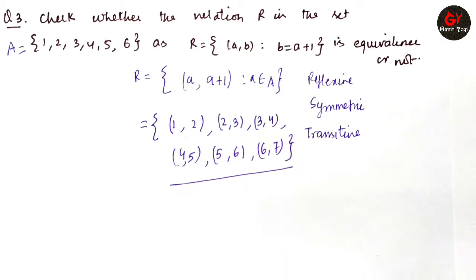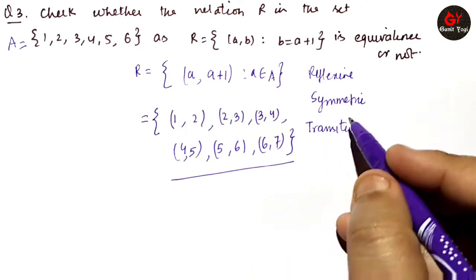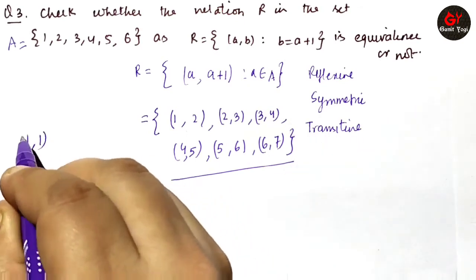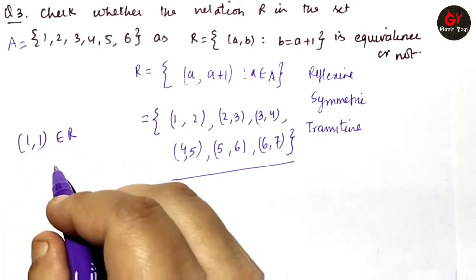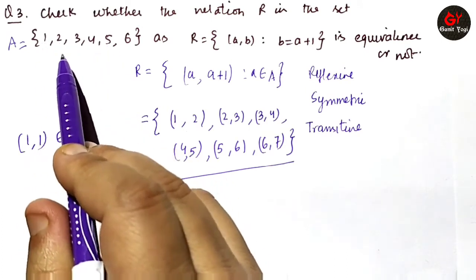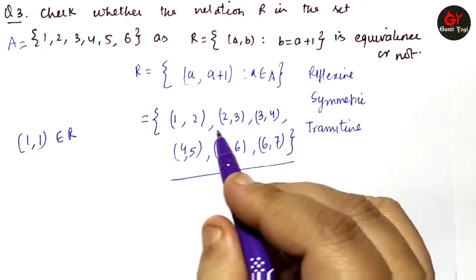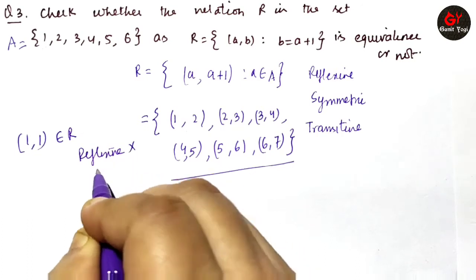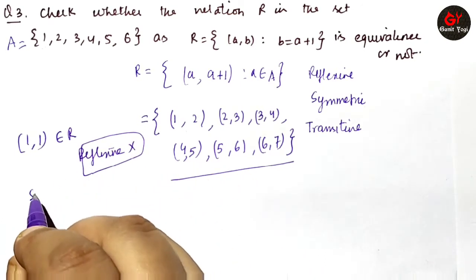First, reflexive — this will not hold, because the reflexive condition requires that the ordered pair of the same element, like (1,1), must be in R; similarly (2,2), (3,3), and so on — every element of the set must have its same-element ordered pair in the relation. That is not the case here at all. So this is not a reflexive relation.